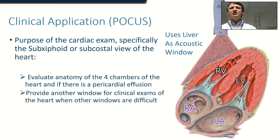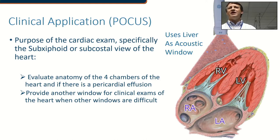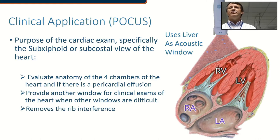If you have a difficult patient with a particular body habitus or rib spacing that allows for a very difficult window in some of the other views, this can also be a go-to. This view is also handy if you're trying to do compressions during a cardiac resuscitation — you can have someone or a machine applying compressions to the thoracic cage while the probe is out of the way with the sub-xiphoid view, letting you see if those compressions are effective. It also removes some rib interference, which is helpful for tall, skinny people with tight rib spaces.